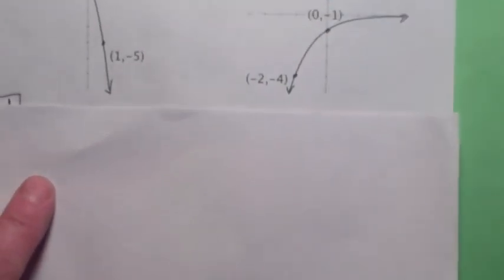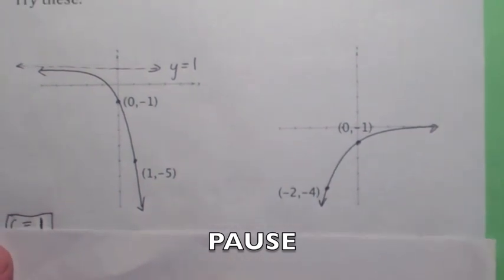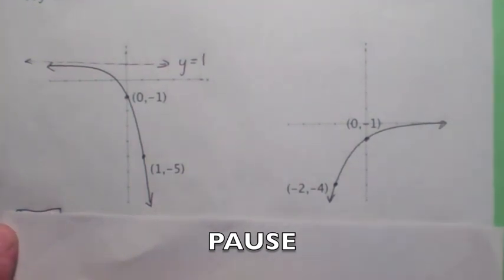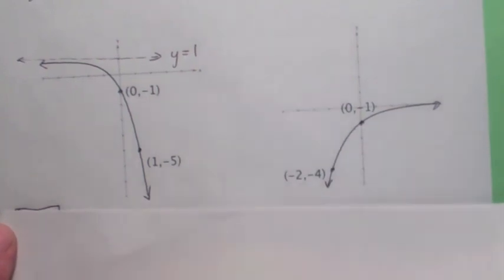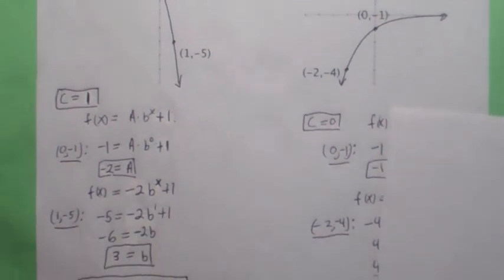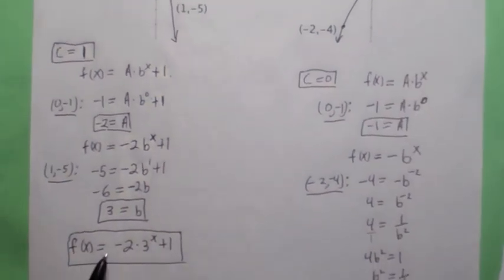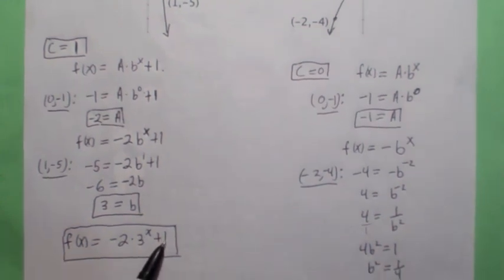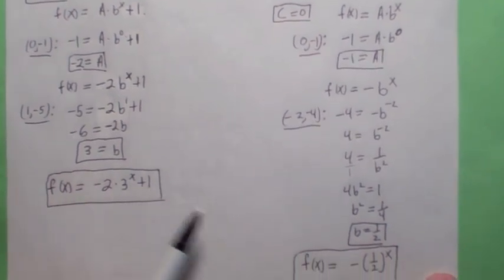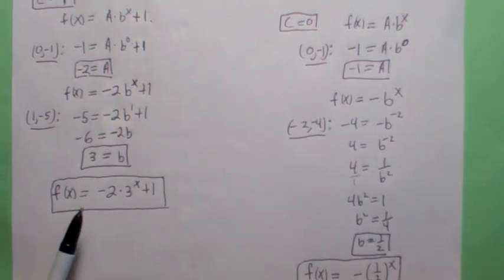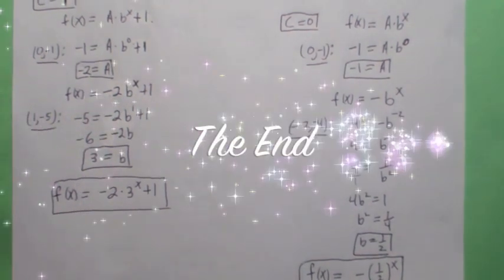What I want you to do now is try these on your own. Hit the pause button and see if you can find the equation of these two graphs. The answer to the first one was f of x equals negative 2 times 3 to the x plus 1. On the second one, your function is f of x equals negative 1 times 1 half to the x. You can check that on your own and we'll go over these later.